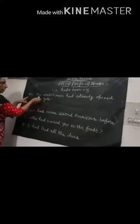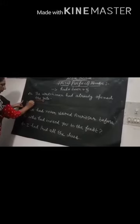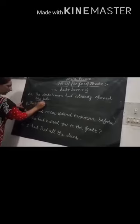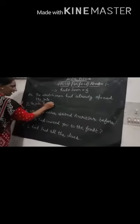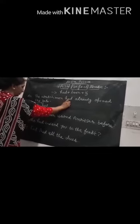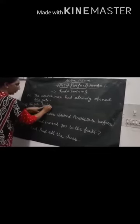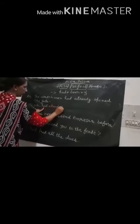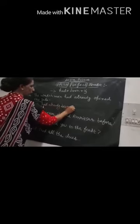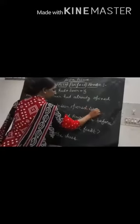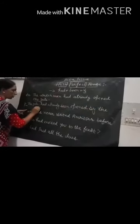Now look at this example: 'The watchman had already opened the gate.' In the passive, the gate comes first. The word 'had' is already there in the question — no need to change it. So we write: 'The gate had already been opened by the watchman.'